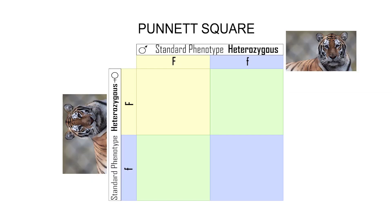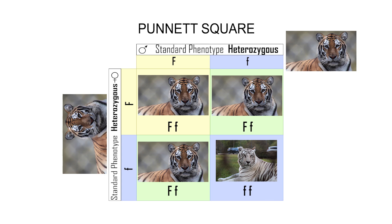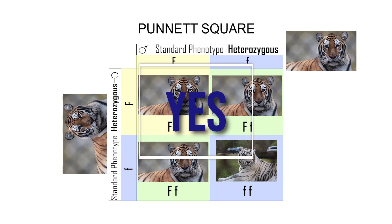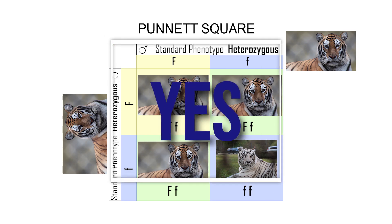Therefore, if a heterozygous male mated with a heterozygous female tiger, out of four offspring, one of them would be a white tiger with a genotype of lowercase f, lowercase f. This is a 25% chance. So yes, a white tiger can have standard phenotype parents.